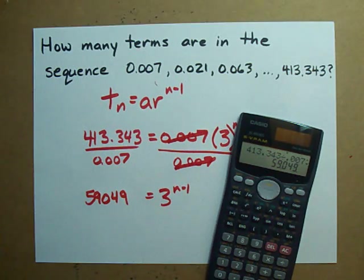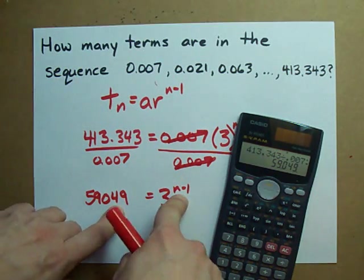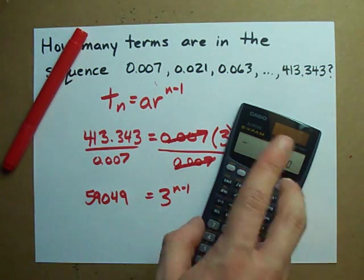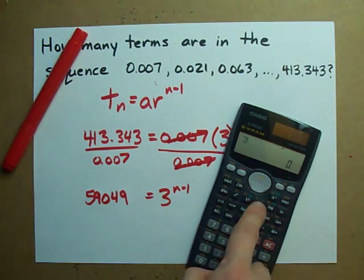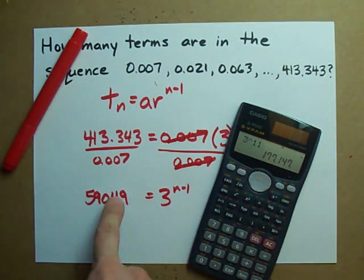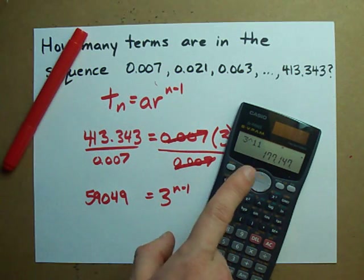Alright. Now, how do you solve for n here? A lot of teachers will want you to guess and check. What that means is you go 3 to the power of, I don't know, 11. Nope, too big. So this exponent isn't 11.